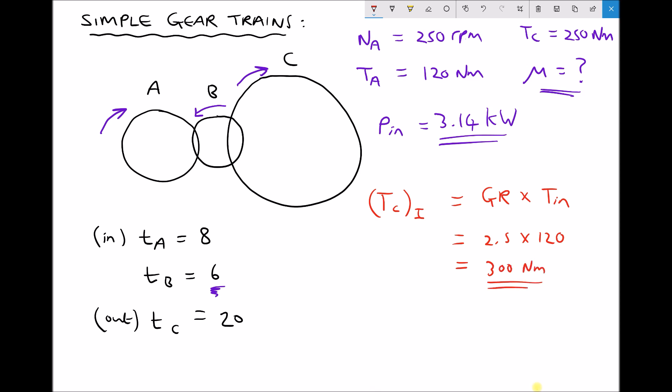Now we know that our measured output torque was 250 newton meters. So we're not achieving the ideal quantity. And the reason we're not achieving the ideal quantity is because of our losses or our inefficiencies.